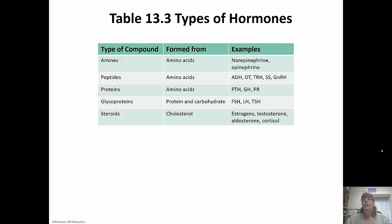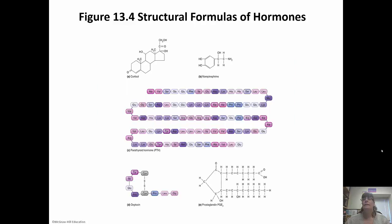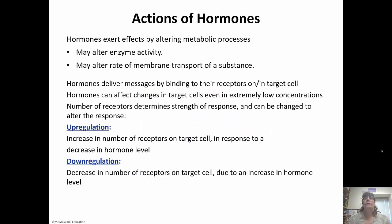Here's a chart showing the type of compound, how they're formed, and some examples. Hormones exert their effects by changing metabolic processes — they can change enzyme activity or the rate of membrane transport of a particular substance. They deliver their messages by binding to receptors on the target cells. Hormones can affect changes in target cells even if we do not have a lot of the hormone. The number of receptors determines the strength of the response and can be changed to alter the response.